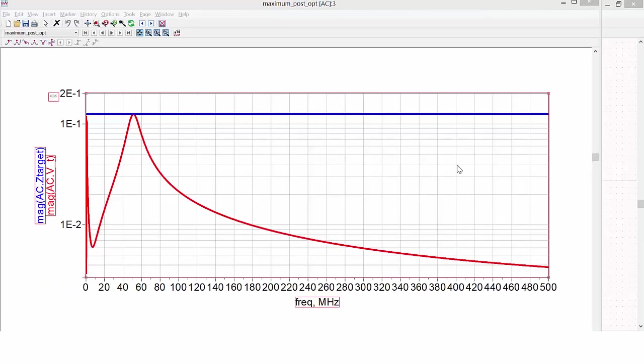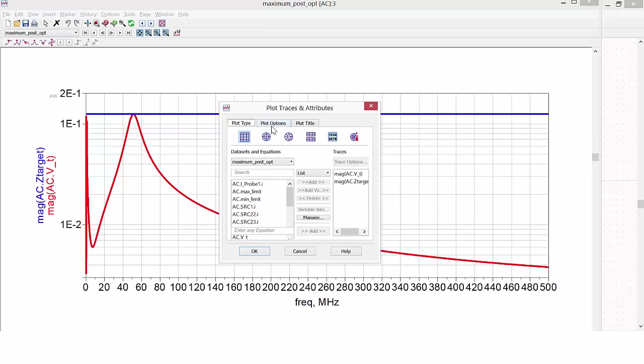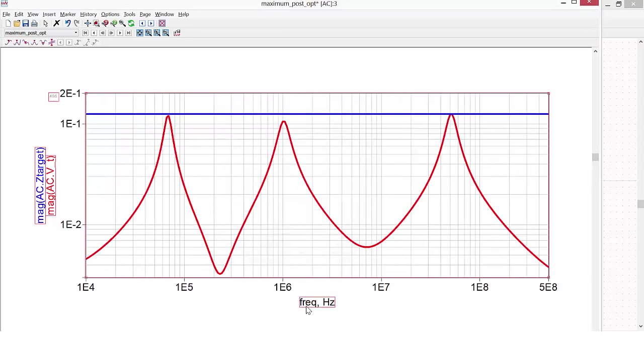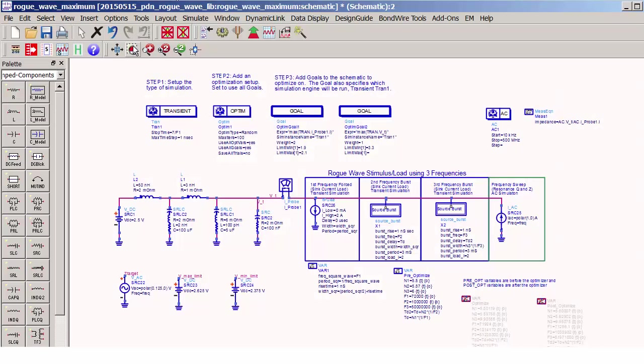Simulating this impedance, only one resonance is apparent. This illustrates why I always want to use a log frequency display for both my measurements and my simulations. Changing from a linear frequency display to a log frequency display, all three resonances are now visible. So now let's go ahead and generate the rogue wave.